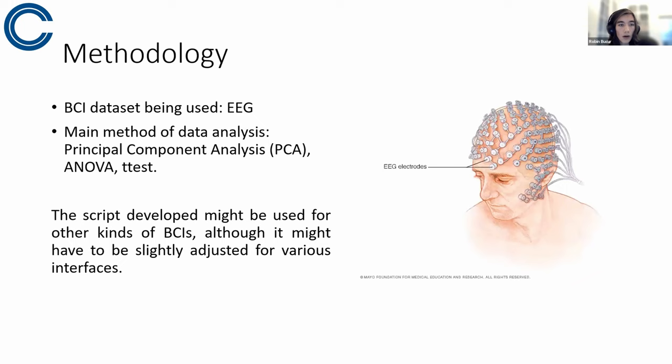The methodology would be using BCI datasets, mainly EEG, even though the availability is quite low. I mean, I've been actually able to find brain recordings of people watching the Twilight Zone instead of EEGs of caffeine. So yeah, it's much rarer than I expected, but I'm dealing with that. Main method of data analysis includes principal component analysis, ANOVA and t-test. I'll get into that a bit later.